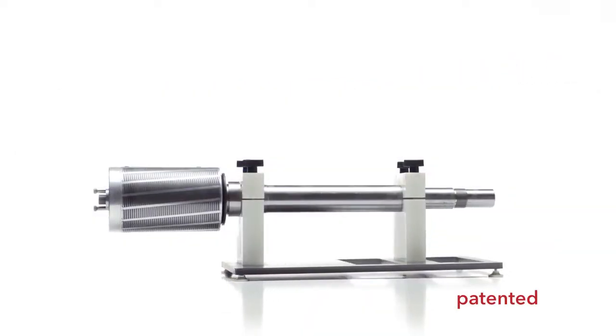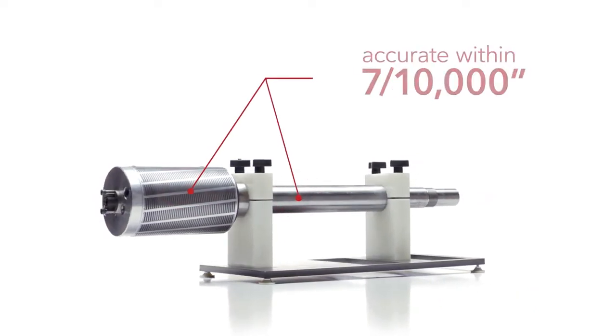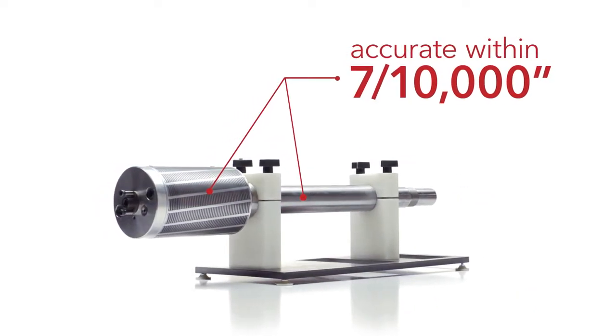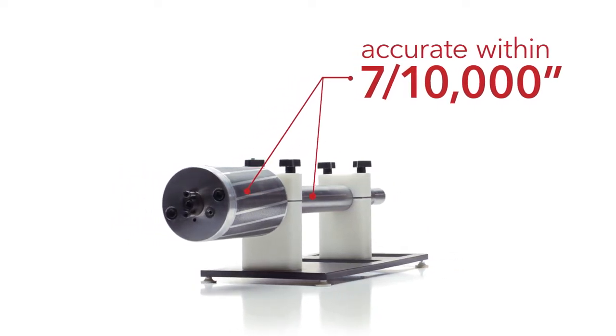The Platemaster arrives as a complete assembly, and it's accurate. With a combined shaft and cylinder runout of less than seven ten-thousandths of an inch, an accuracy that's perfect for today's high-definition print jobs.